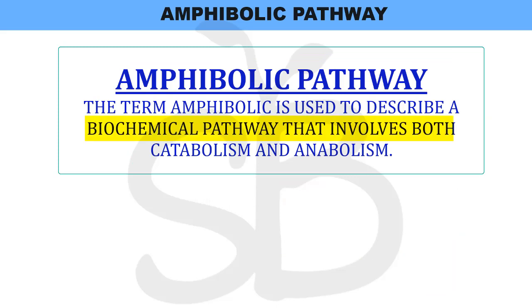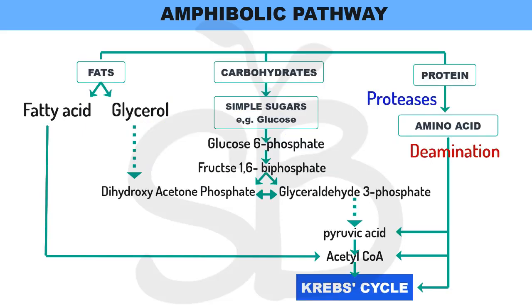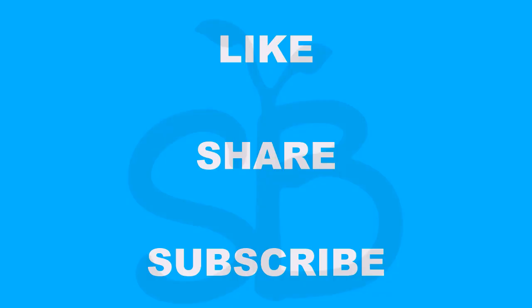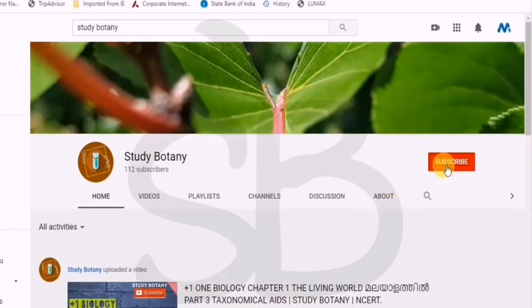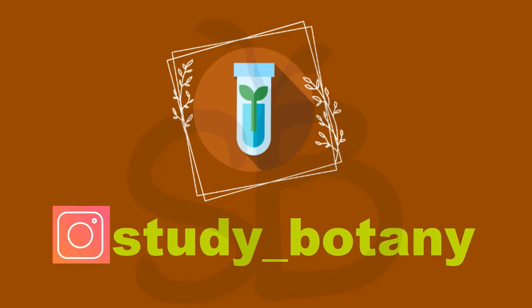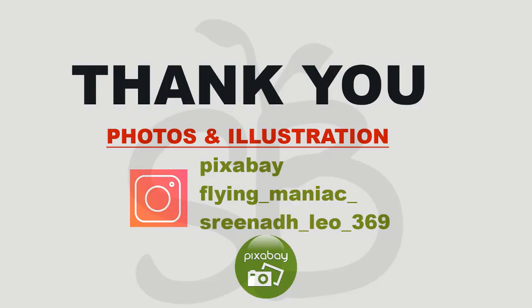The Amphibolic Pathway means a biochemical pathway that involves both catabolism and anabolism. We will complete the diagram and make the arrows correct as shown in the textbook. In the next video, we will discuss the respiratory quotient. That's it for today.